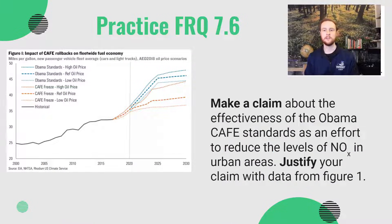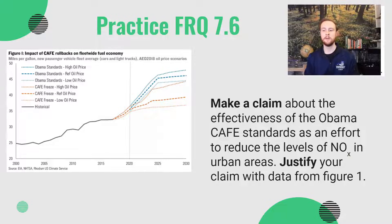For today's practice FRQ 7.6, look at the graph showing different potential CAFE standards for the future. Make a claim about the effectiveness of the Obama CAFE standards as an effort to reduce NOx levels in urban areas, and then justify your claim with data from Figure 1, which is the graph shown on the screen.